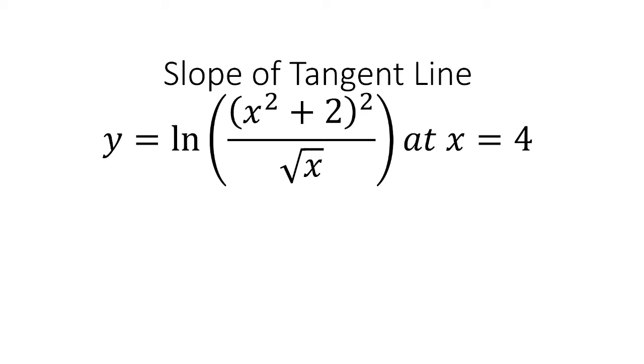In this video, we're going to find the slope of the tangent line of y equals ln of x squared plus 2 squared over the square root of x at x equals 4.